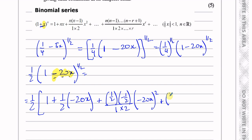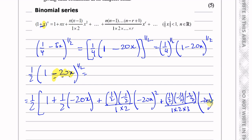We follow the same pattern for the fourth term: n times (n−1) times (n−2) over 3! — that's a half times (minus a half) times (minus 3/2) over 1 times 2 times 3 — times (minus 20x) cubed. That's as far as we need to go: four terms in total.